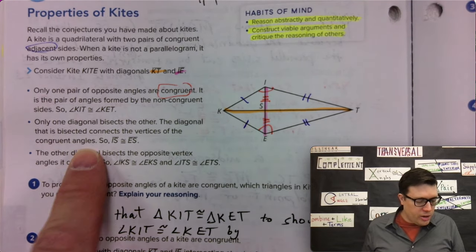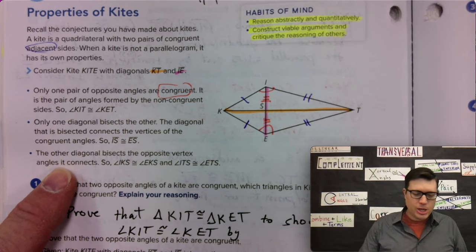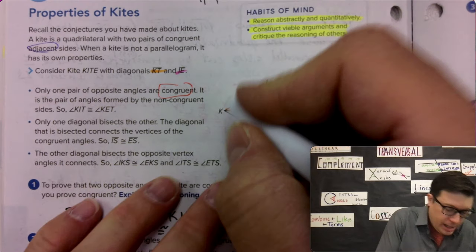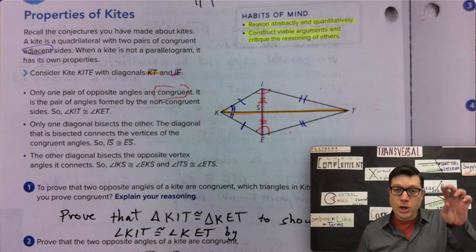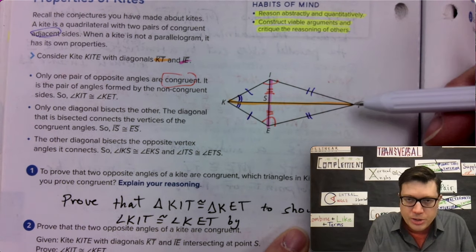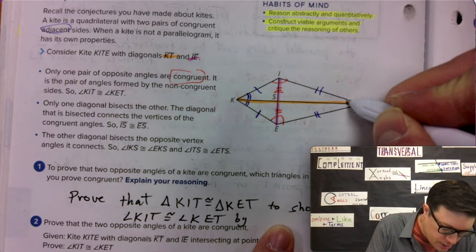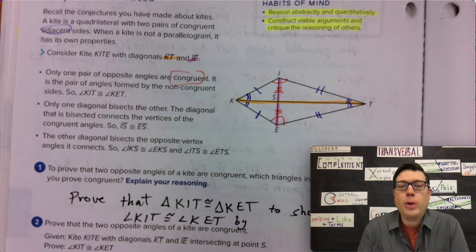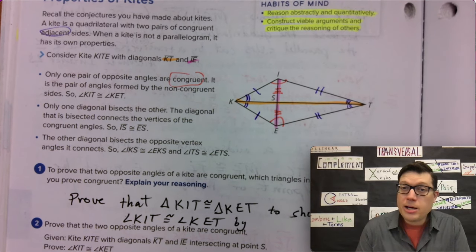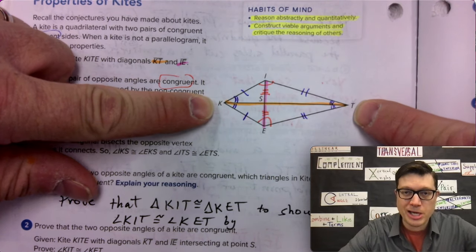Only one diagonal bisects the other IS. The other diagonal bisects the opposite vertex angles. So, the angle that's created here, two arcs and two arcs, those two angles are the same. And then on the other side, this is what the orange KT diagonal does. One, two, three. And one, two, three. Those two angles happen to also be the same because KT bisects those angles.